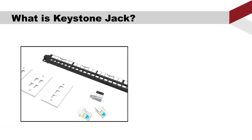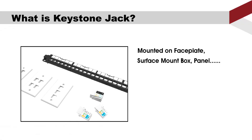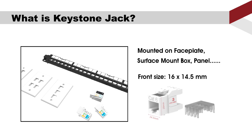Keystone Jacks are usually mounted on a faceplate, surface mount box, or empty panels. The front size of a Keystone Jack is standard: 16mm height by 14.5mm width.